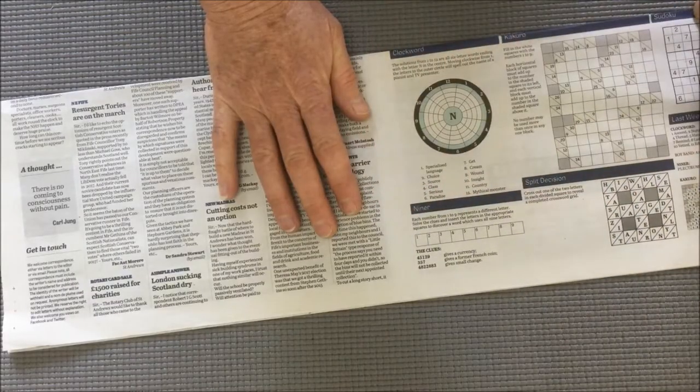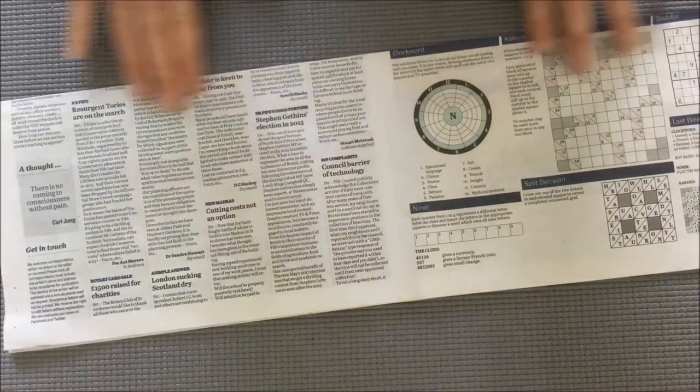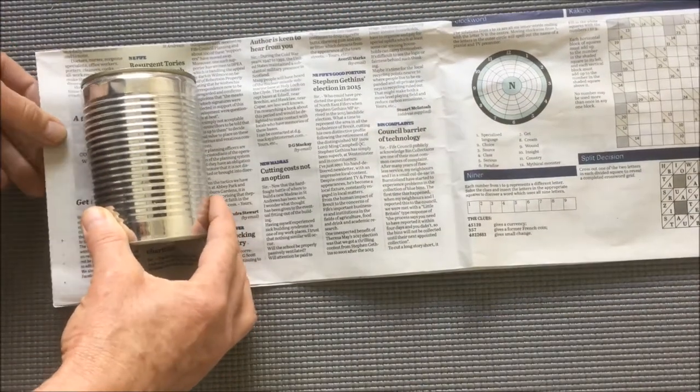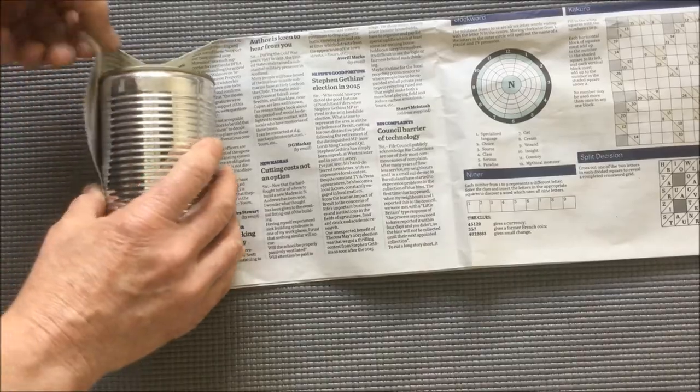Begin by folding a piece of newspaper in half lengthways. Now take your mould and place it on the newspaper leaving an inch or so overhang at the bottom. And just roll the paper around the mould.